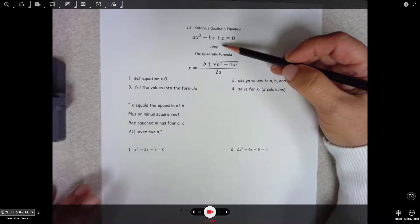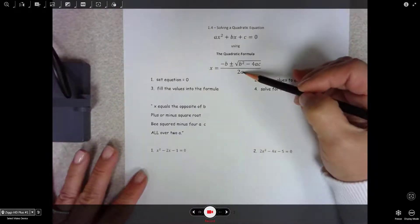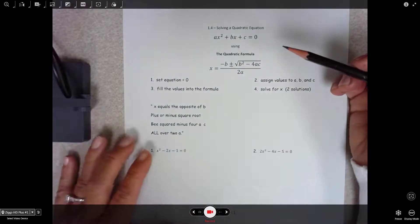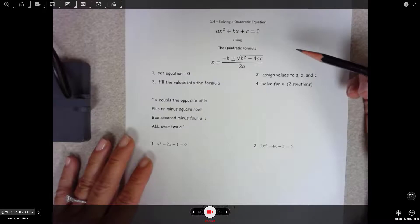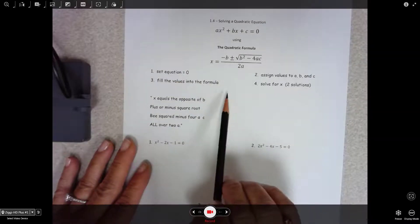It's really just plug and chug, that's it. You pick out your A, your B, your C terms and plug them in and then solve. So your arithmetic might be a little touchy, but there are just four little steps to it.